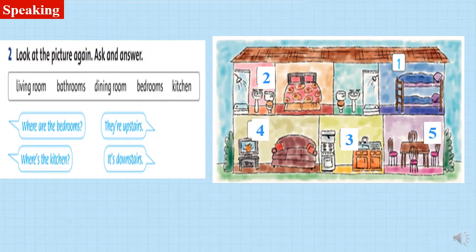Exercise two. Look at the pictures again. Ask and answer. I will ask: where are the bedrooms? They are upstairs. Good job. So, where's the kitchen? It's downstairs. Yes. You can ask and answer by yourself at home. Is it okay? Yes. Good job.